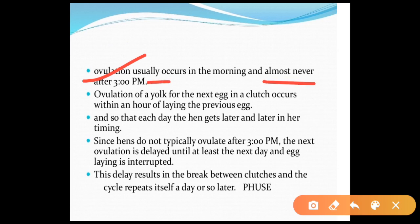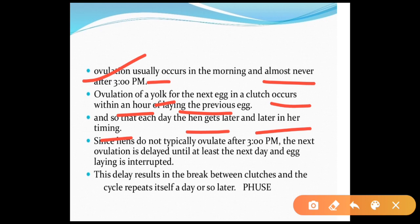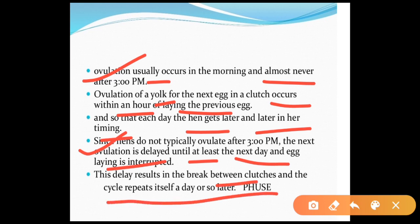Ovulation usually occurs in the morning and almost never after 3 p.m. Ovulation of the yolk for the next egg in a clutch occurs within an hour of laying the previous egg, so each day the hen lays later. Since hens do not typically ovulate after 3 p.m., the next ovulation is delayed until at least the next day and egg laying is interrupted. This delay results in a break between clutches, and the cycle repeats itself a day or so later.